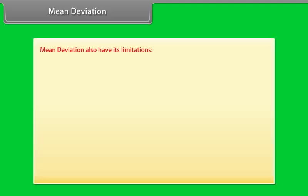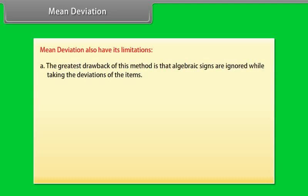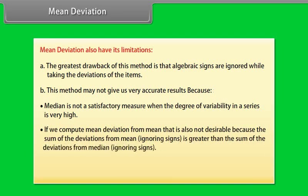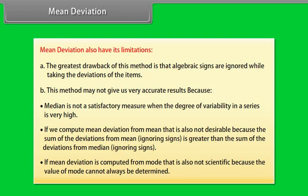Mean deviation has its limitations. The greatest drawback is that algebraic signs are ignored while taking the deviations of the items. This method may not give accurate results because the median is not a satisfactory measure when the degree of variability in a series is very high. If we compute mean deviation from mean, the sum of deviations ignoring signs is greater than from the median. If computed from mode, it is also not scientific because the value of mode cannot always be determined.